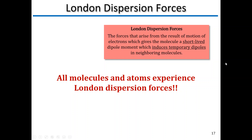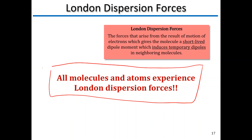The next type is London dispersion forces, or LDF. This is a force that arises from the motion of electrons, which gives a molecule a short-lived dipole moment that induces temporary dipoles in neighboring molecules. Remember I said dipole-dipole was between permanent dipoles — this is why we make the distinction, because these are short-lived dipole moments. A big important fact: all molecules and atoms experience London dispersion forces. It doesn't matter what other interactions are occurring — you always have LDF. So if a question asks what interaction occurs between two molecules, you should always include LDF even if there's no other force.